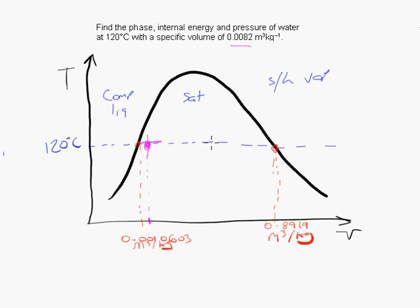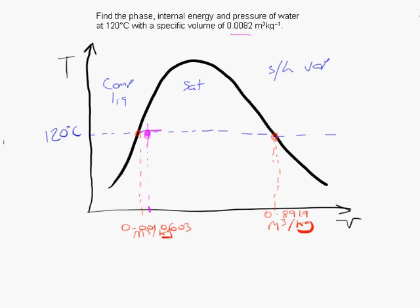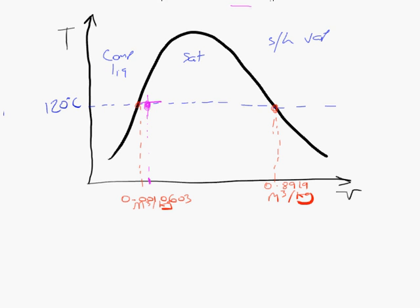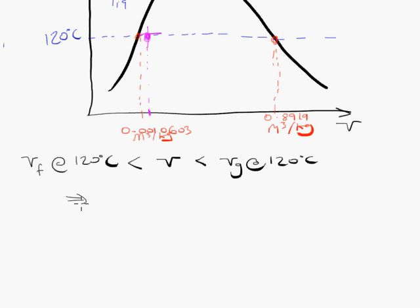We don't need to draw the diagram and think about it graphically, but it helps to do that. But we can write down the logic of that mathematically. We can say that the specific volume of saturated liquid at 120 Celsius, and this subscript F usually means saturated liquid, is less than our actual specific volume V, and that in turn is less than the specific volume of saturated vapor at that same temperature. And from that we conclude that we are dealing with saturated water. And that is the first of the three answers that we were looking for.